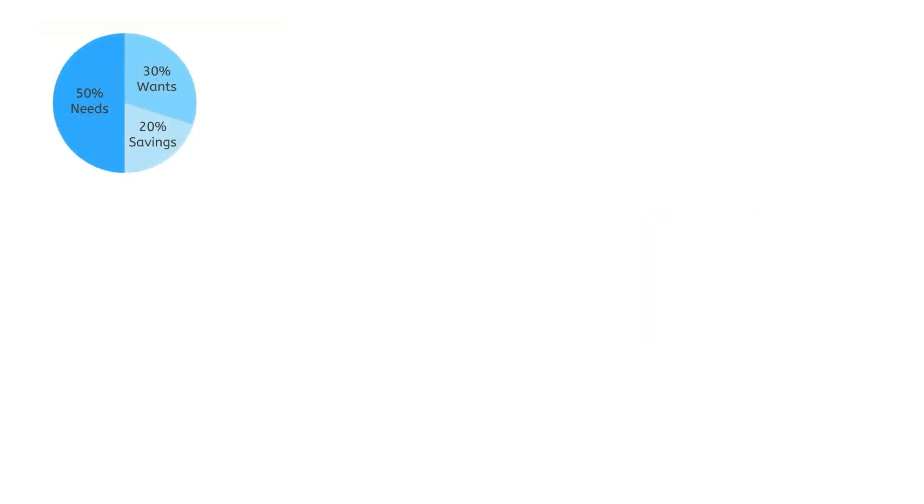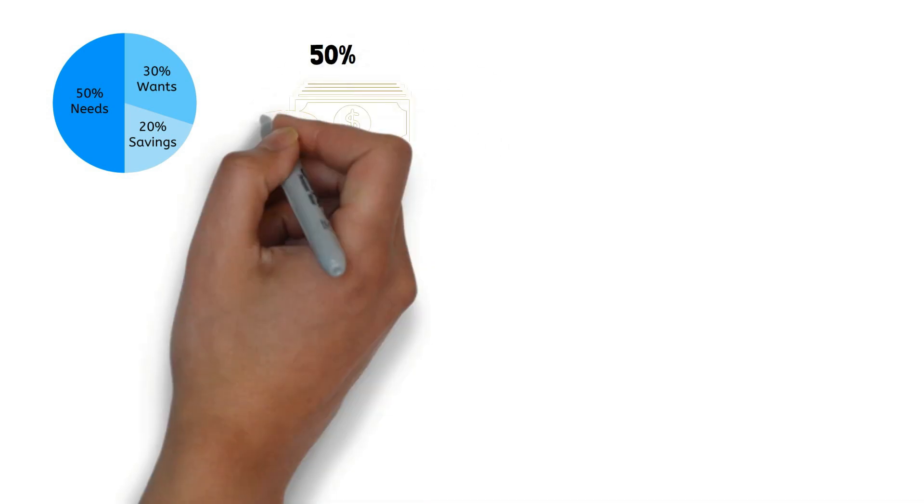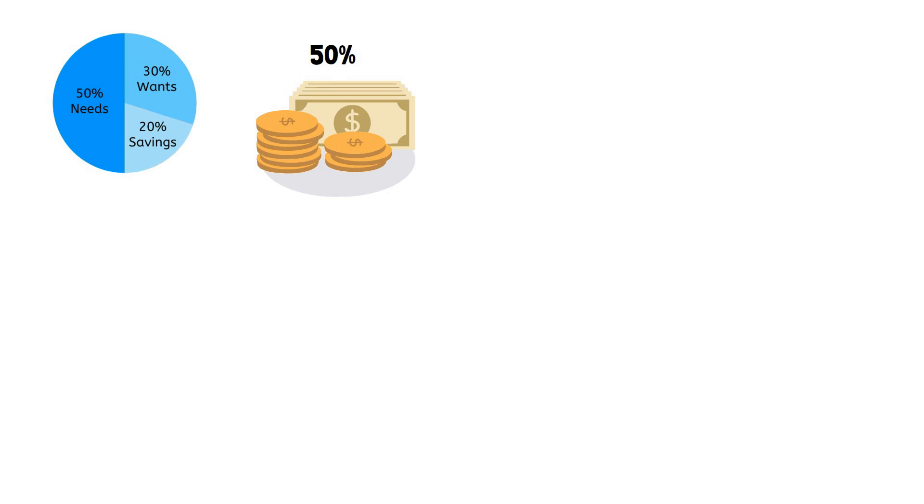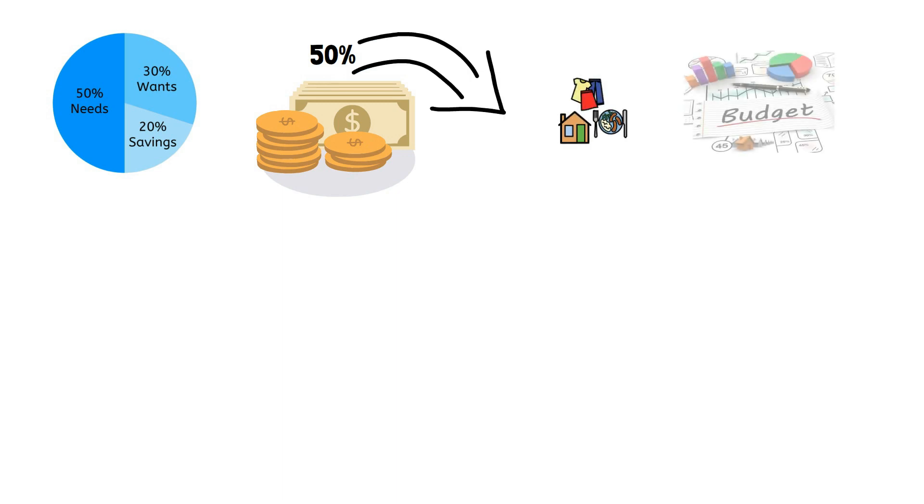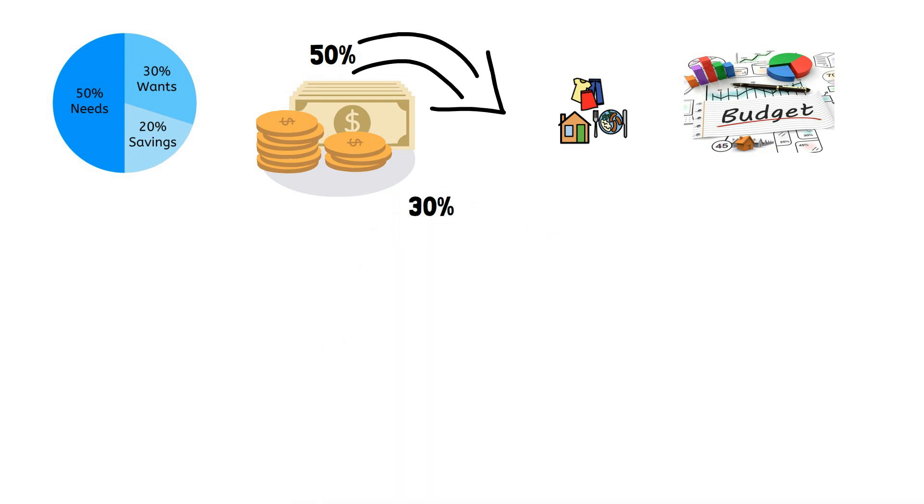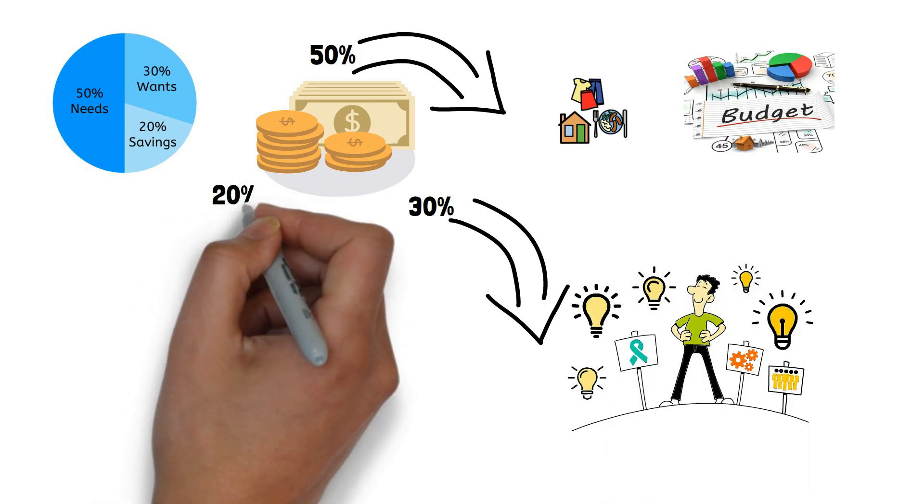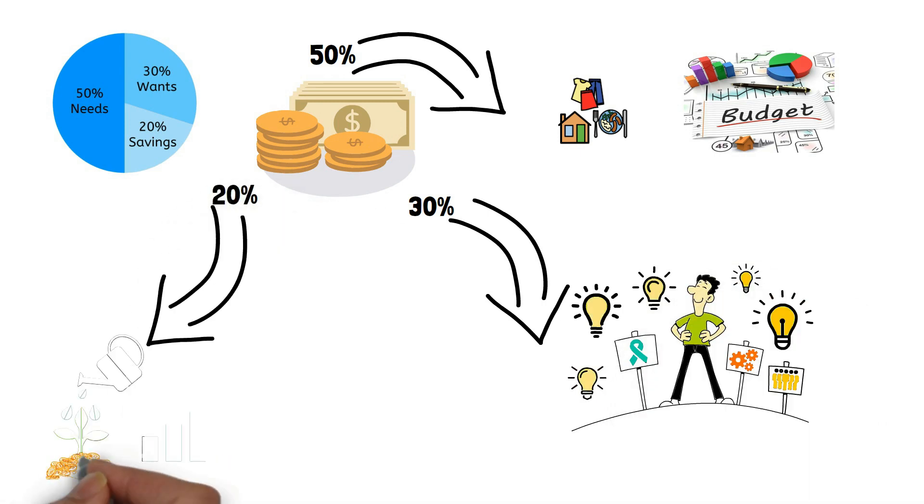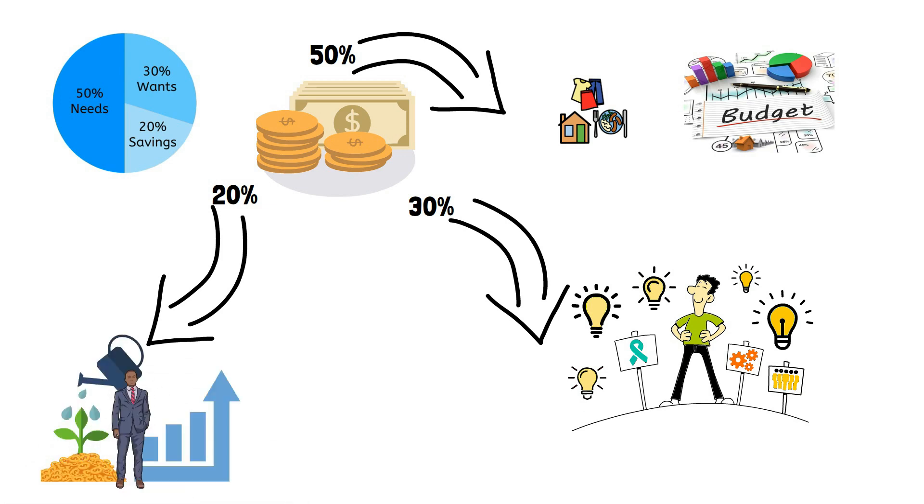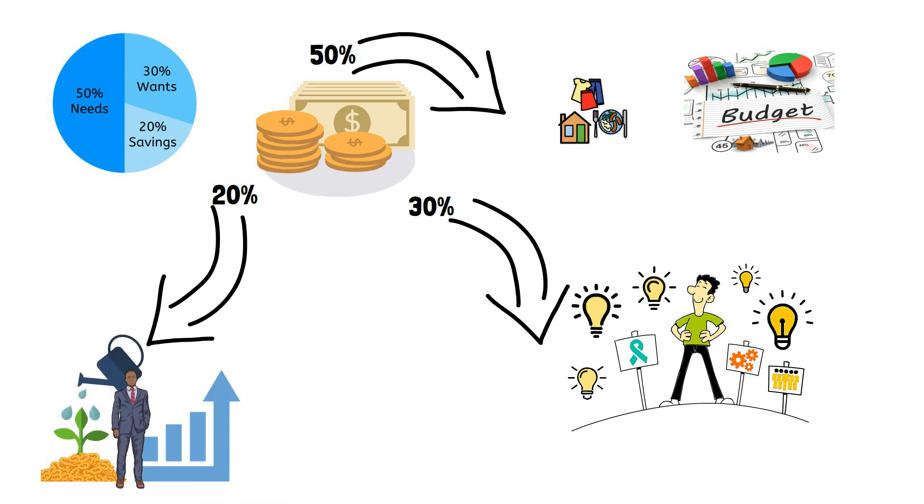One effective approach to maintaining a balanced lifestyle is to utilize the 50-30-20 rule. Allocate 50% of your income towards necessities such as housing and food, ensuring that those essential expenses remain within a reasonable portion of your budget. Dedicate 30% of your income to discretionary spending on wants, such as travel and entertainment. Lastly, reserve that 20% of your income for savings and investments, prioritizing your long-term financial goals.